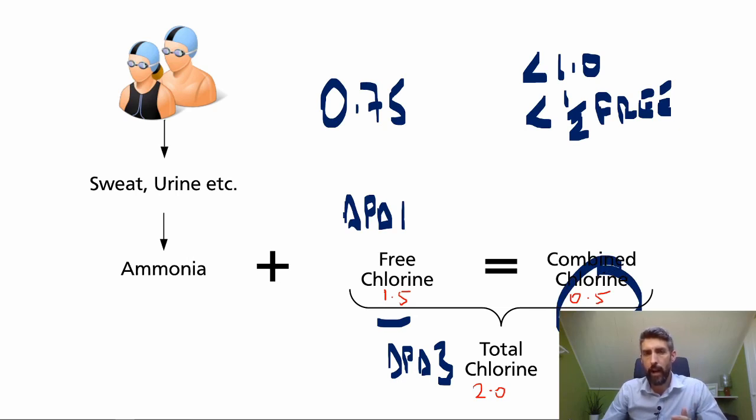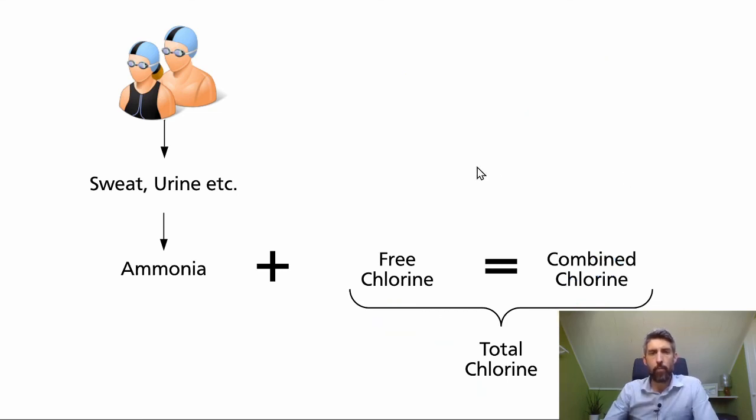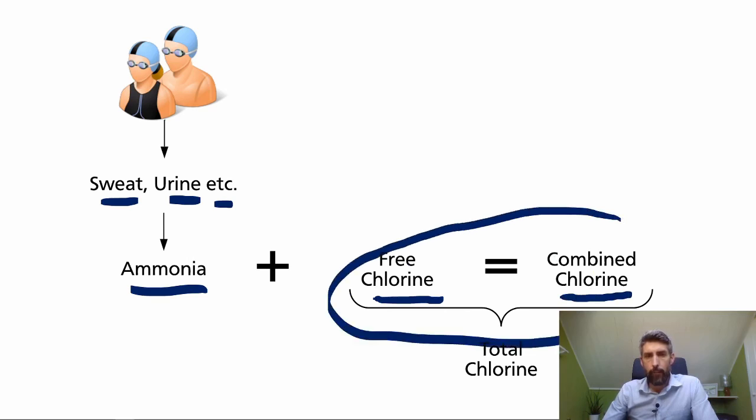So just in summary then, you've got bathers that bring in sweat, urine, etc. into the pool, which turns into ammonia. And then that ammonia ends up mixing with the free chlorine, which produces combined chlorine. And total chlorine is the total of the free and the combined.